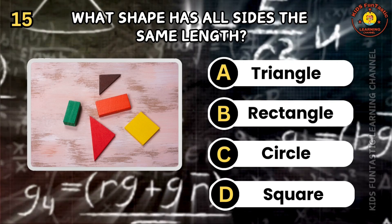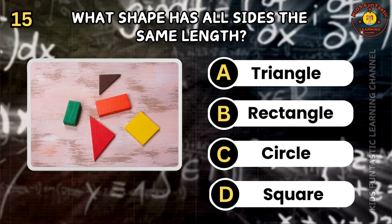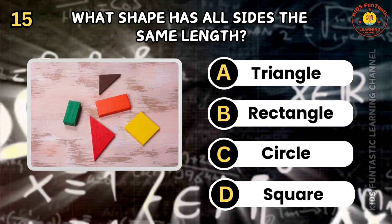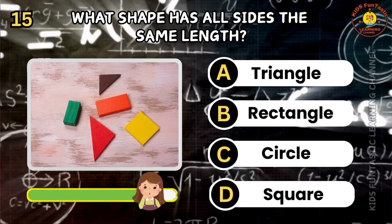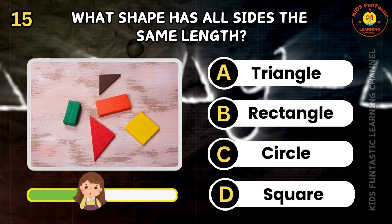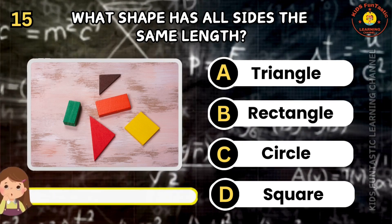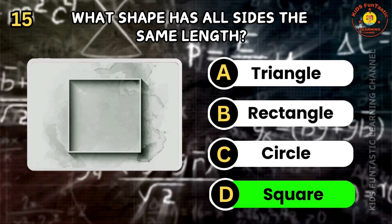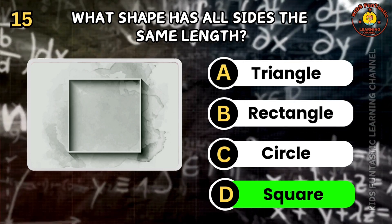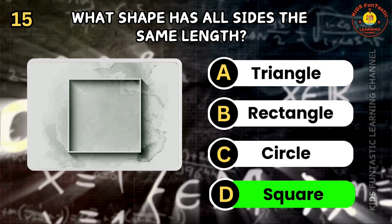Question 15. What shape has all sides the same length? A: triangle, B: rectangle, C: circle, D: square. You nailed it! The correct answer is D. A square has all sides the same length.